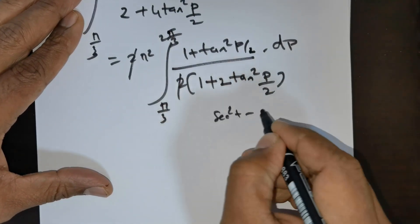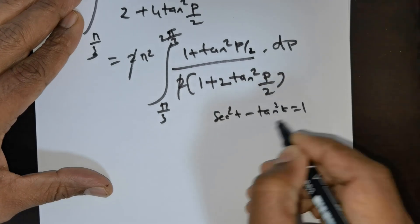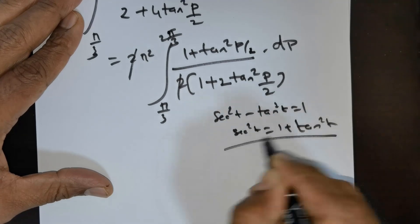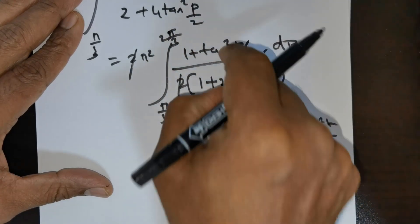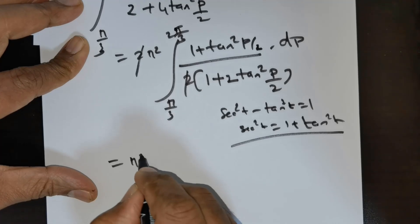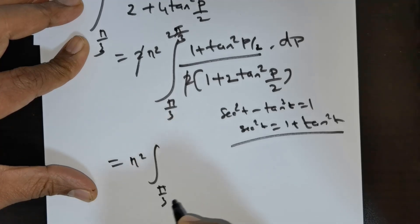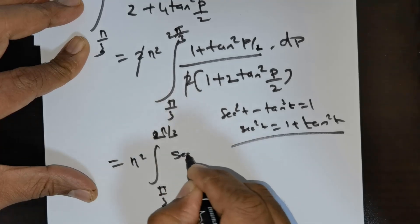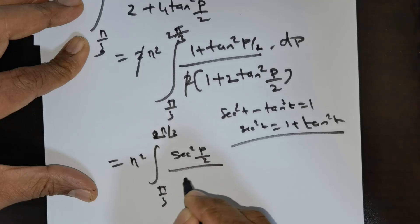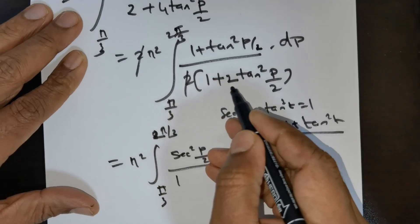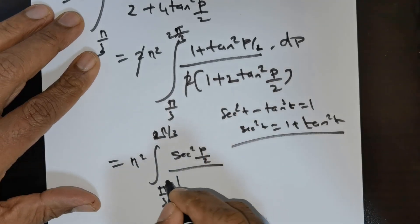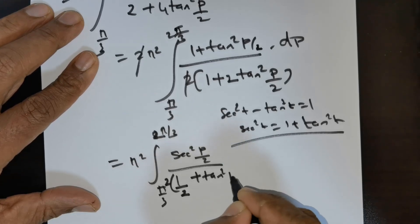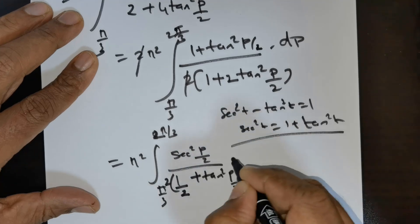Using the identity sec²t = 1 + tan²t, translating to p/2 gives sec²(p/2) = 1 + tan²(p/2). So the numerator becomes sec²(p/2). Taking 2 out of the denominator gives 1/(2 + tan²(p/2)), yielding the integral as π² times the integral from π/3 to 2π/3 of sec²(p/2) dp divided by (2 + tan²(p/2)) times (1/2).